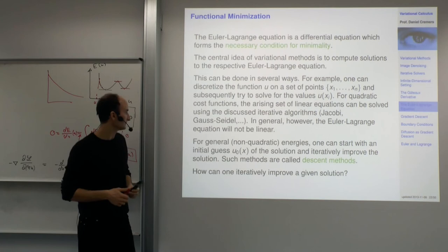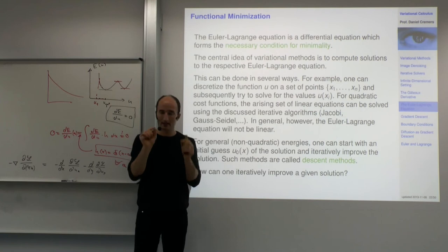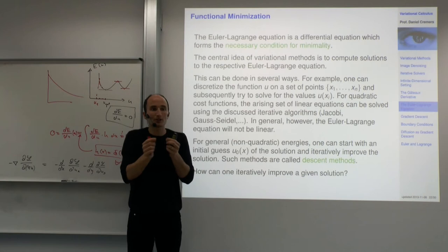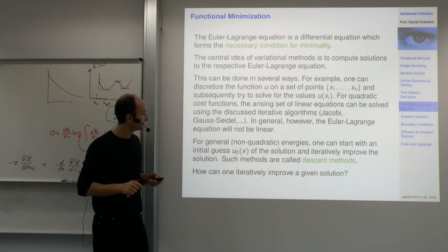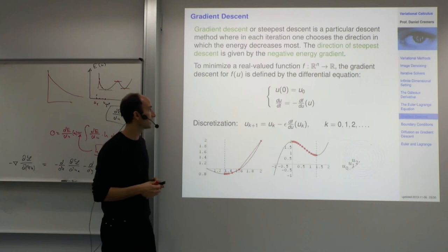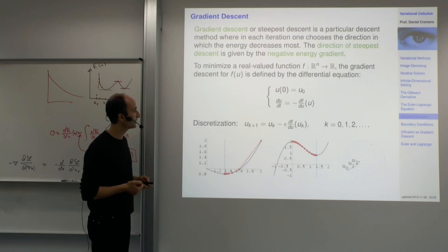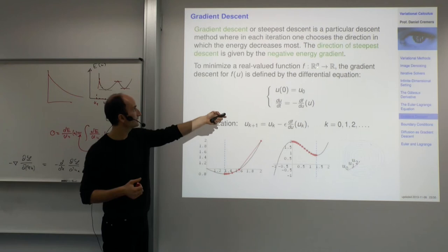These are descent methods, and the key question is: once I initialize somewhere with U_0, which direction do I go to make the energy descend? The functional gradient tells us where it goes downhill. This is something from finite-dimensional analysis, and I'll start there since things are still familiar.